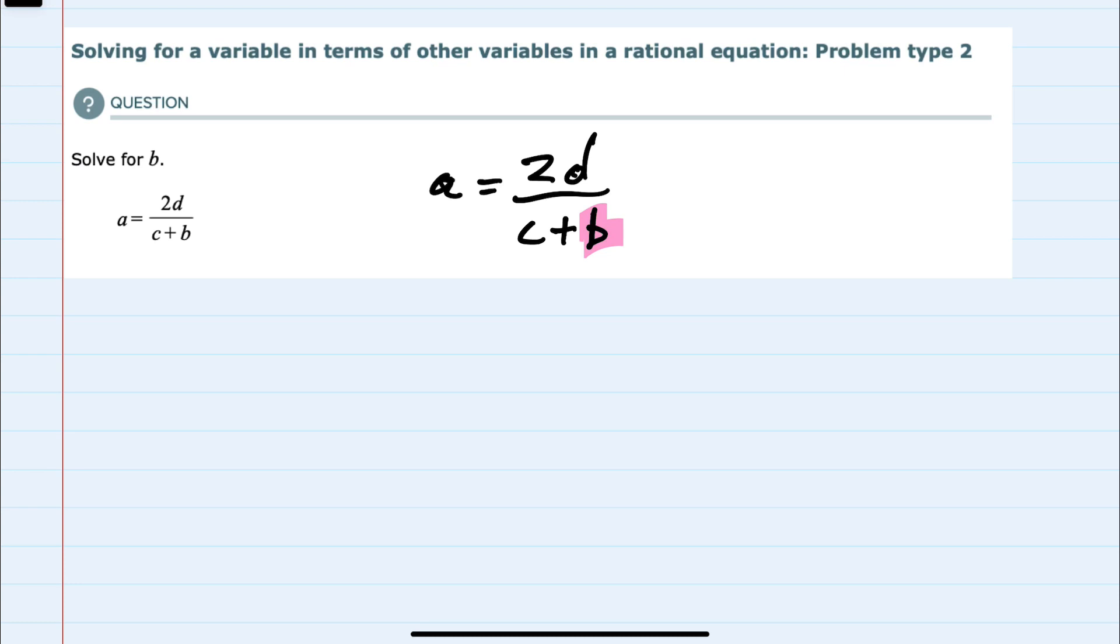And since b is in the denominator, the first thing that I'll try to do is to get the b out of the denominator. And since I only have one denominator here, c plus b, I can do that by multiplying both sides of the equation by c plus b.